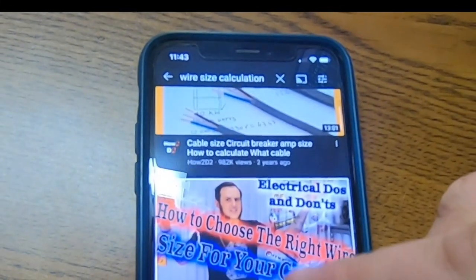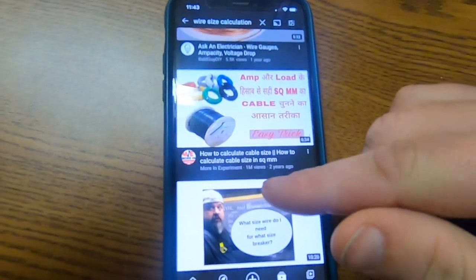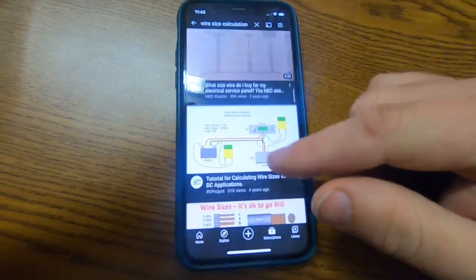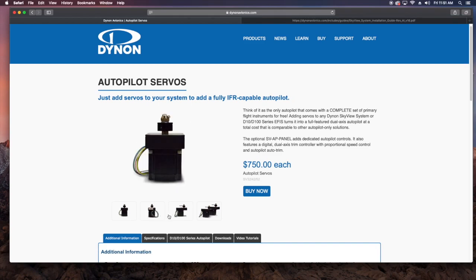There are so many videos out there on this subject, but for my target audience, I thought a practical application of these theories was needed. For this example, I'll be determining the wire size I need to power my Dynon SV42 autopilot servos.